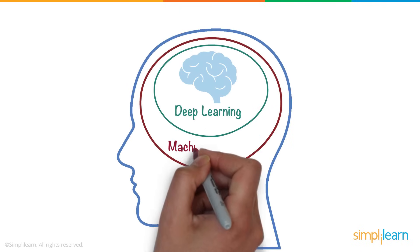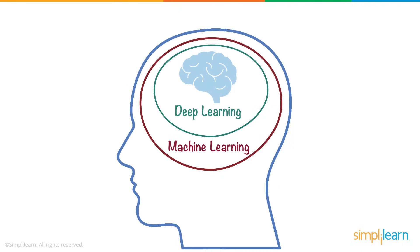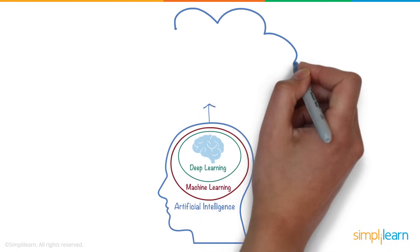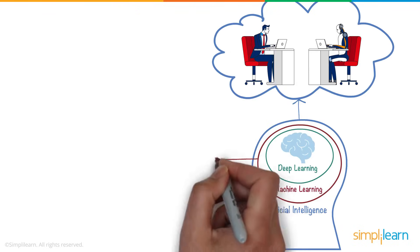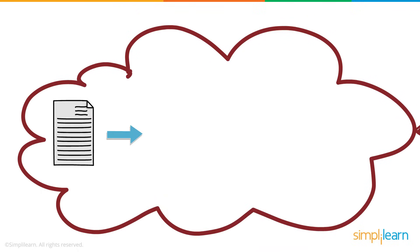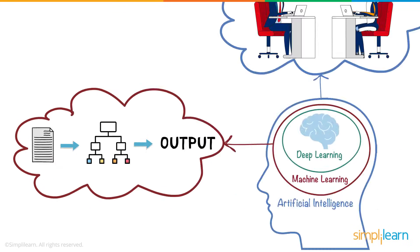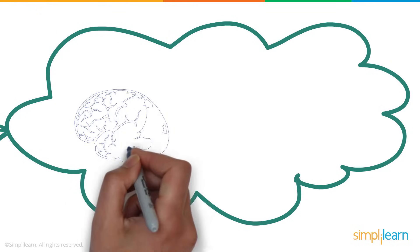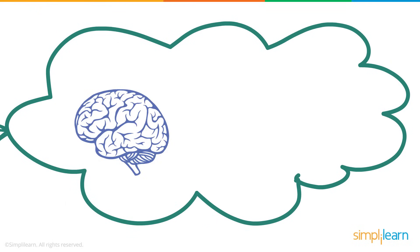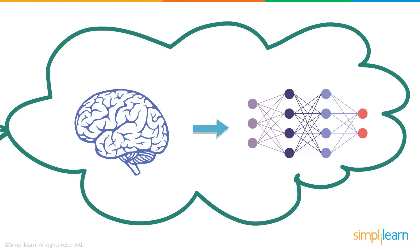Deep learning is a subset of machine learning, which in turn is a subset of artificial intelligence. Artificial intelligence is a technique that enables a machine to mimic human behavior. Machine learning is a technique to achieve AI through algorithms trained with data. And finally, deep learning is a type of machine learning inspired by the structure of the human brain. In terms of deep learning, this structure is called an artificial neural network.